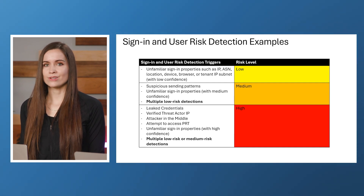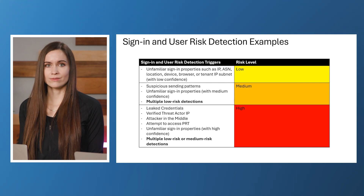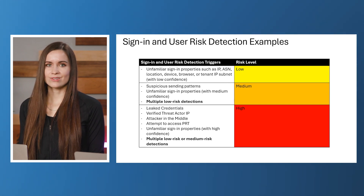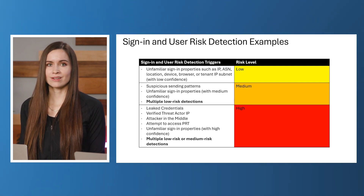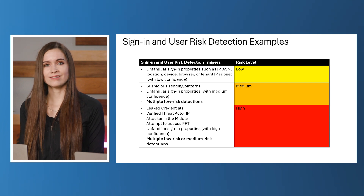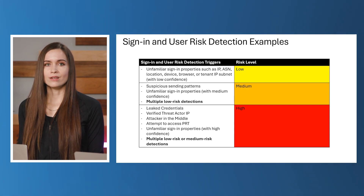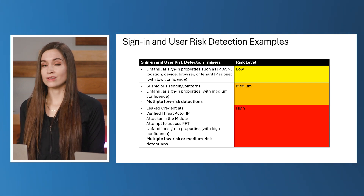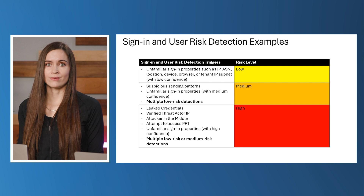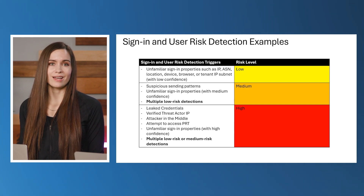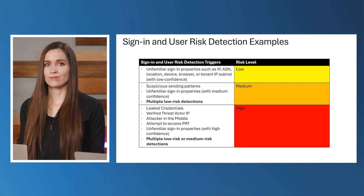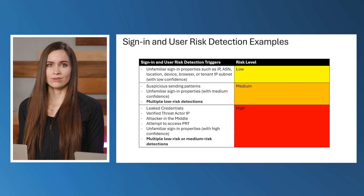Another frequent question is, what inputs are used to calculate those risk levels? We mainly look at detections from suspicious activities and vulnerabilities and then assess their severity. Known leaked credentials on the dark web would have a higher threat level assessment than, for example, an isolated instance of unfamiliar browser usage.